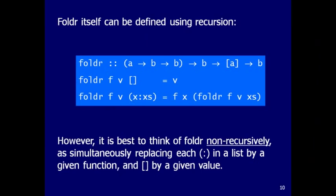How is `foldr` itself defined? Using recursion: `foldr f v [] = v` for the empty list, and `foldr f v (x:xs) = f x (foldr f v xs)` for a non-empty list — recursively fold the rest, then apply f to the head and that recursive result.